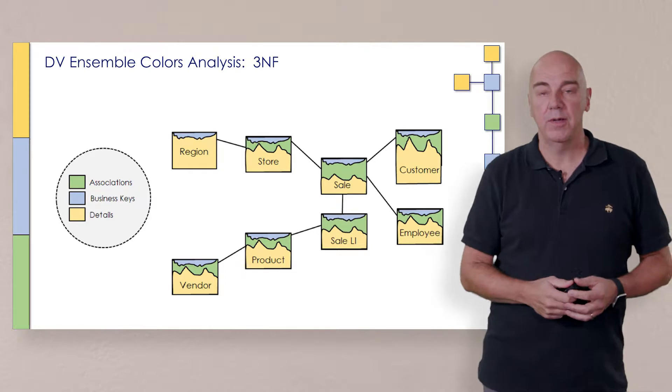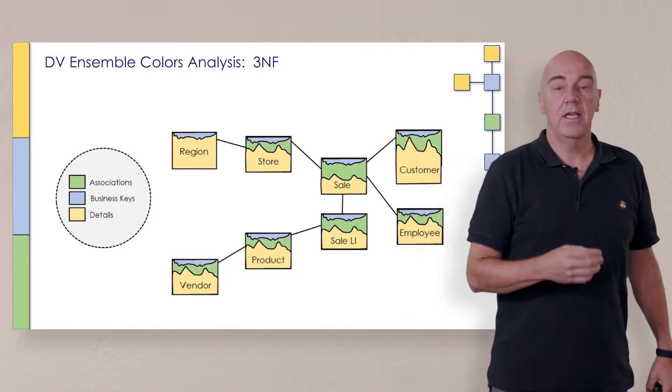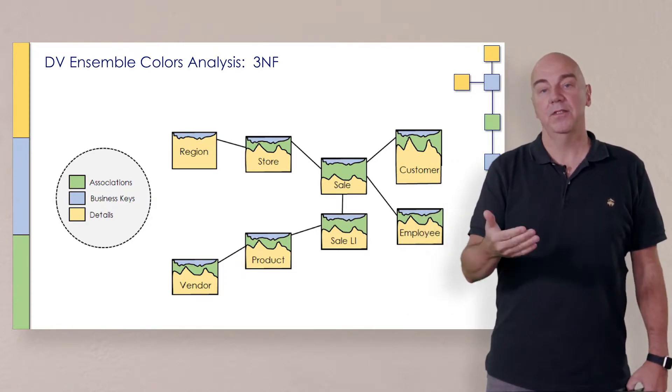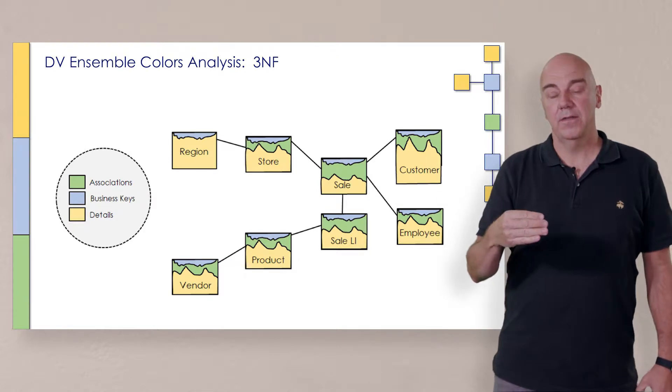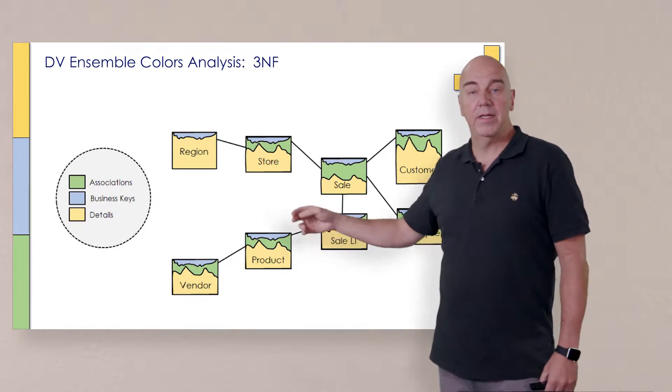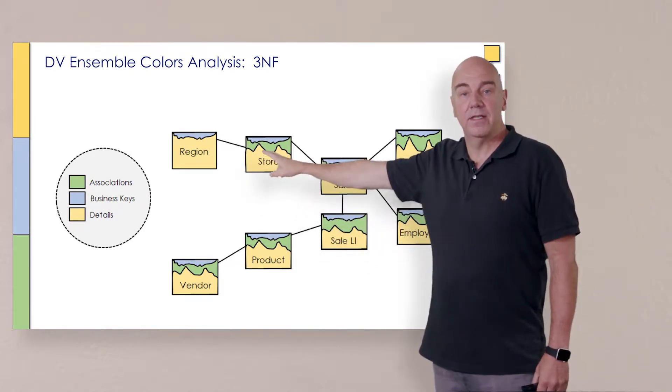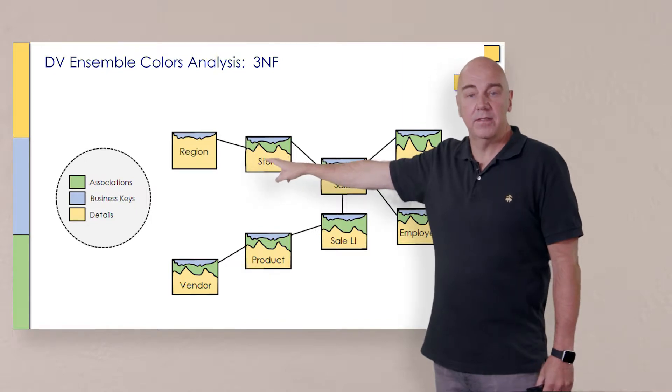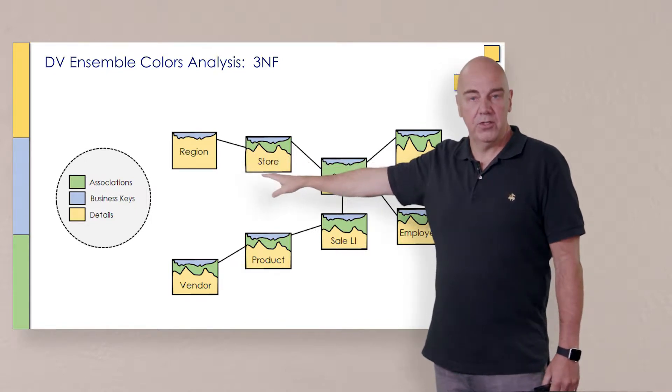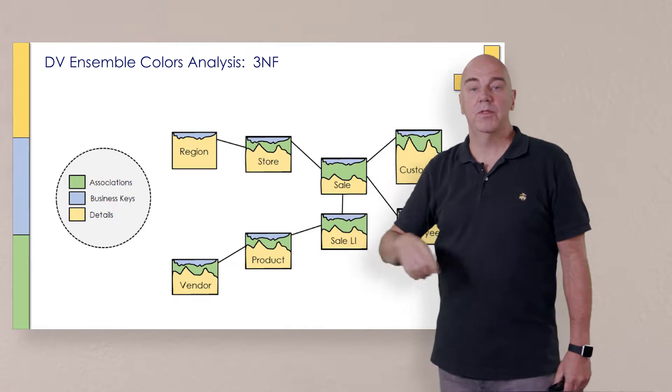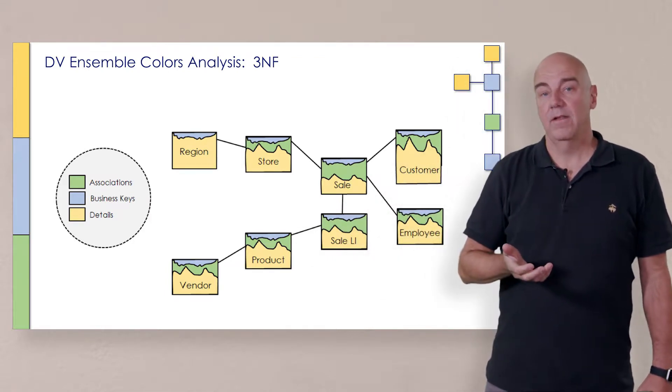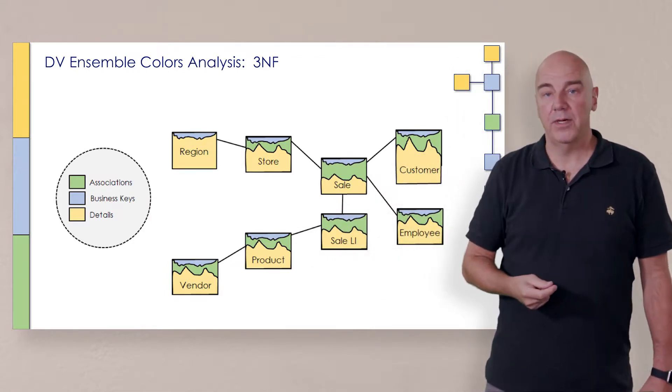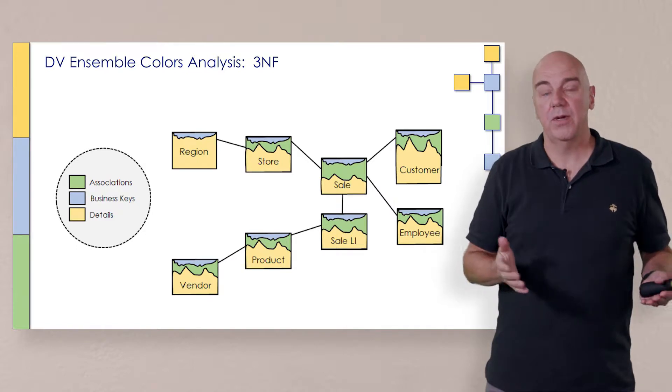And really, it's a pretty simple premise. The idea is that if we look at a table construct using the colors analysis by separating the things that are a key or an instance from the things that are associations or relationships from those things that are context or descriptive properties. That's actually what we're separating.